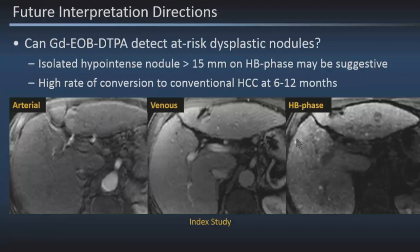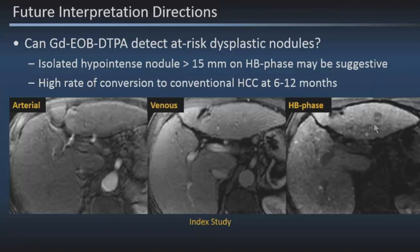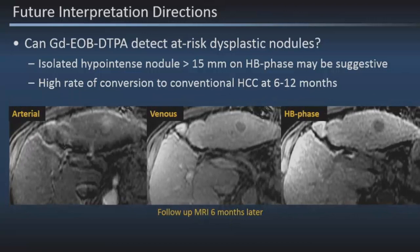There is some evidence of a future interpretation direction with hepatobiliary agents like Gad-EOB — trying to identify the at-risk nodule that converts from a dysplastic nodule to an early HCC. Nodules greater than 15 millimeters that are hypointense on the hepatobiliary phase should be considered at-risk nodules, particularly if they're solitary. Here is a case from our institution with an isolated low signal intensity nodule measuring 1.6 centimeters in the lateral segment. It didn't show arterial enhancement or venous phase washout, but we recommended short-term follow-up. Sure enough, in six months this lesion converted to a conventional HCC with arterial phase enhancement, venous phase washout, and capsule-like enhancement.